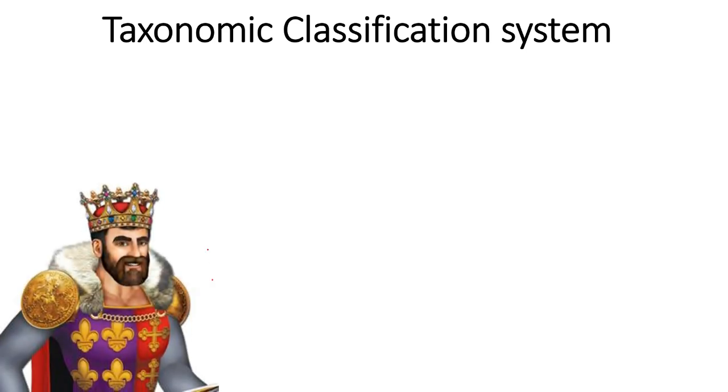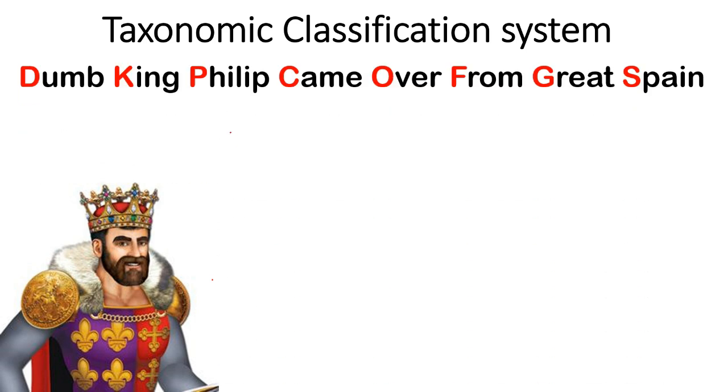A really dumb king, that's why I put this picture of this king, although it's kind of offensive to say, no offense though. The sentence you need to remember is: Dumb King Philip Came Over From Great Spain.